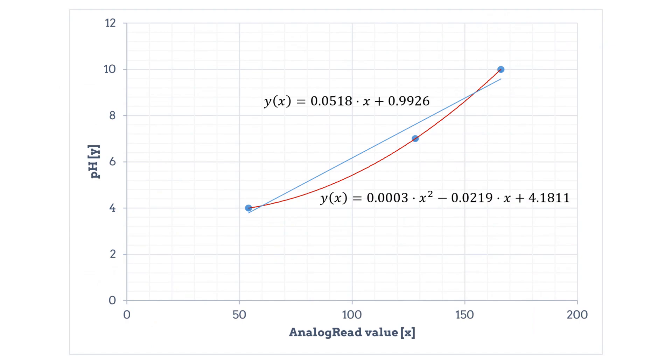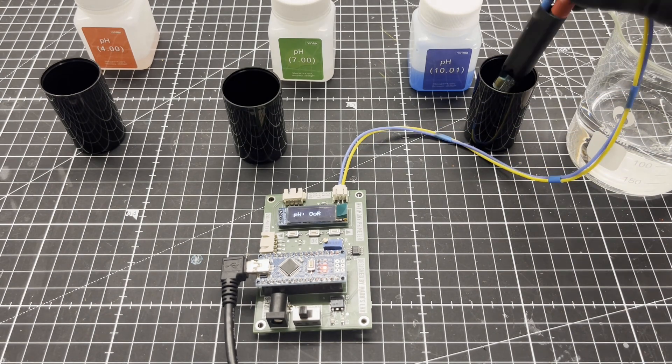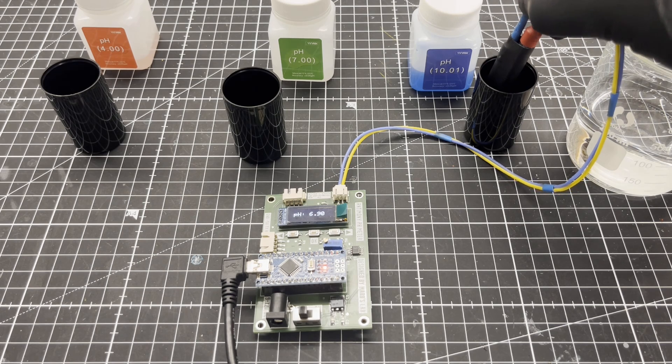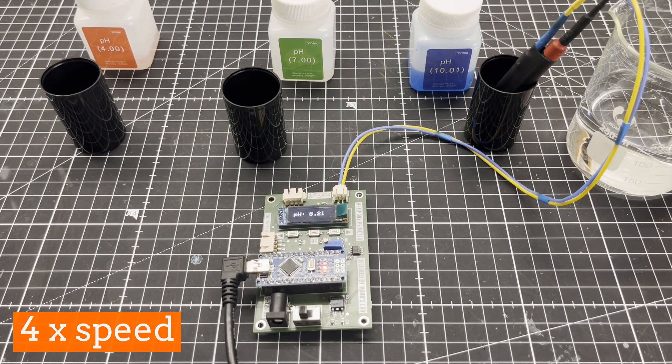Next, I made some off-camera measurements to obtain a function by regression analysis that can be used to calculate the pH value by the measured voltage. As you can see, the pH value is not linearly dependent on the voltage. Here you can see a time-lapse of a few measurements I made with pH calibration solutions. The response is slower than with a conventional glass electrode.